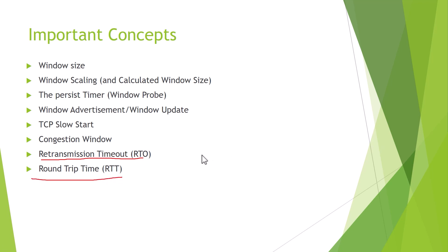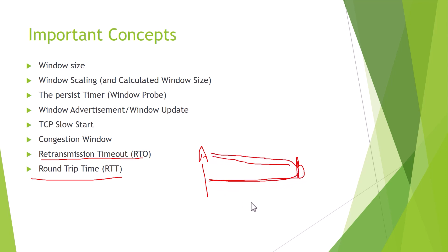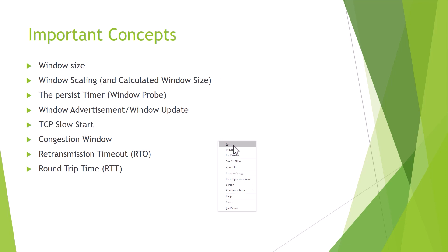Round trip time (RTT) is the time for a packet to travel from sender to receiver and for the acknowledgement to return back to the sender — the complete round trip. An average is taken to determine the overall round trip time, which is called SRTT — Smooth Round Trip Time.